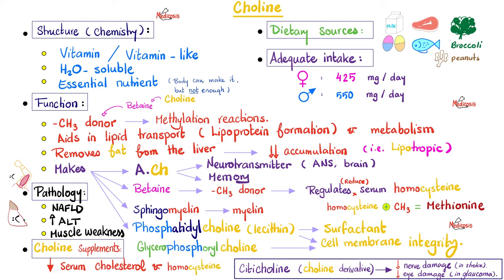Choline makes acetylcholine, the famous neurotransmitter important for memory and the autonomic nervous system. Recall that all pre-ganglionic fibers release acetylcholine. For post-ganglionic fibers: parasympathetic post-ganglionic fibers release acetylcholine, and sympathetic fibers going to the adrenal medulla also release acetylcholine. So choline is a big deal.